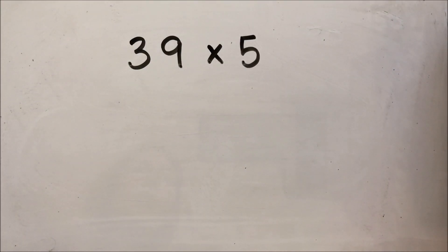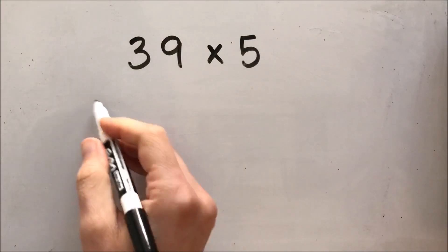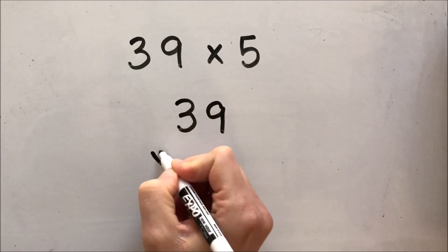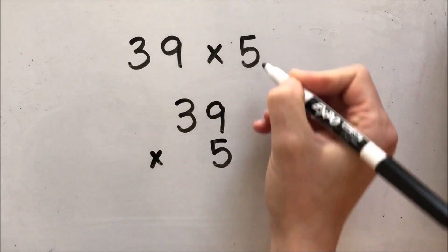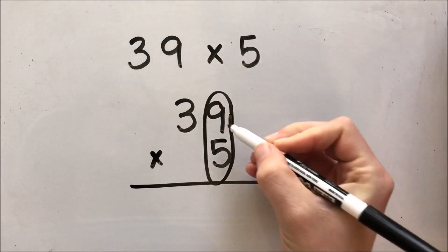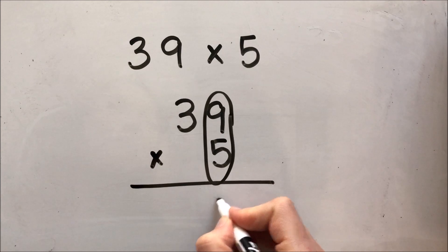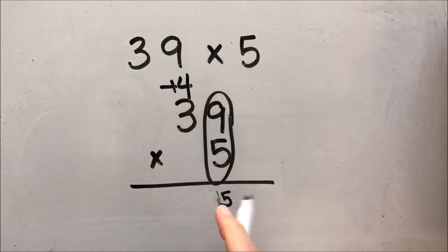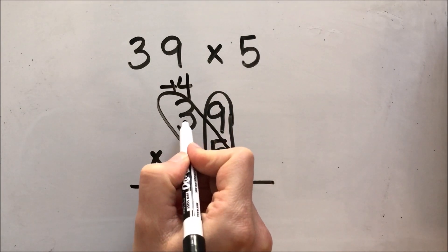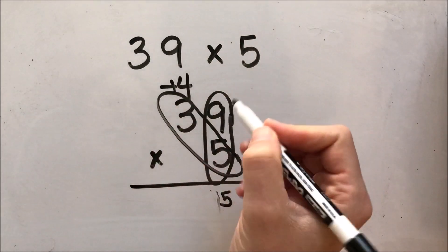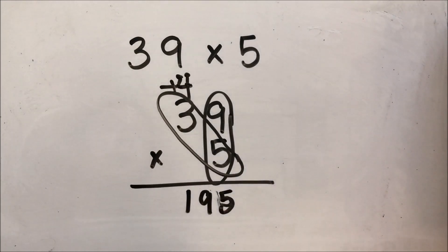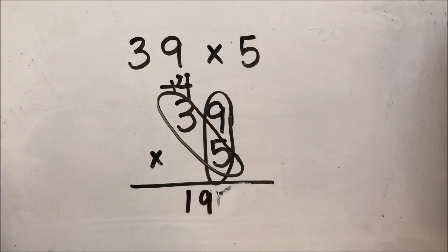Here's your next problem. Decide if you're going to solve this using equal groups, the box method, or the traditional method. Here's my solution: I'm going to use the traditional method, which means I put my two-digit number on top, the multiplication sign, and line up my 5 with my ones place. First I multiply my ones place: 9 times 5 is 45. I can't write 45 here because I can only have one digit in my ones place, so I put the 4 up in the tens place. Then I multiply 5 ones by 3 tens, getting 15 or 150, and I need to add 4 on, which gets me to 19. So I have 195.